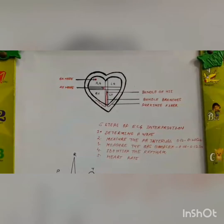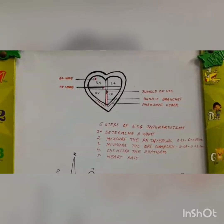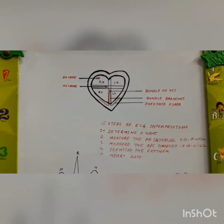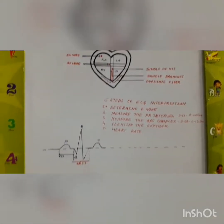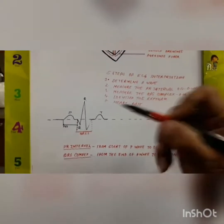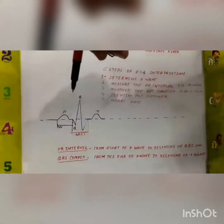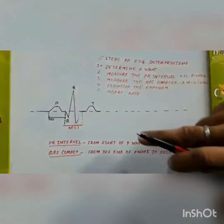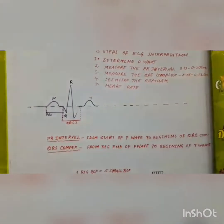In this way, impulses travel in the heart: first from the SA node, which is known as the pacemaker, then to the AV node, from the AV node to the bundle of His, from the bundle of His to the bundle branches, and from the bundle branches to the Purkinje fibers.